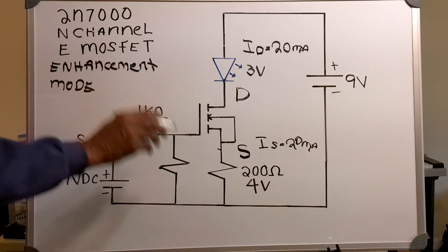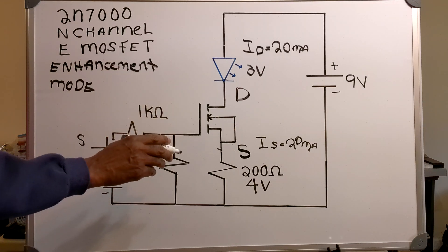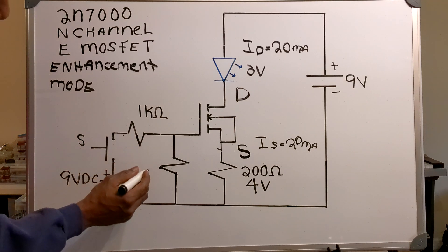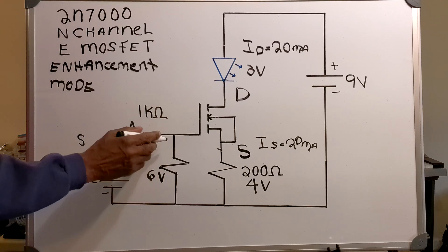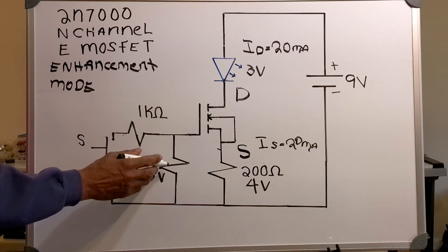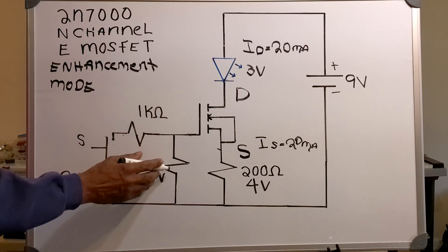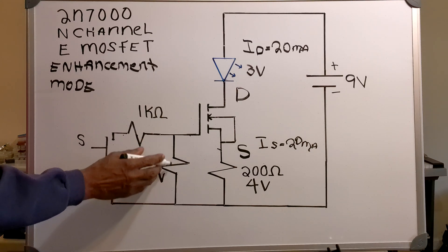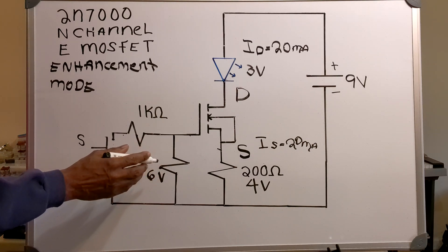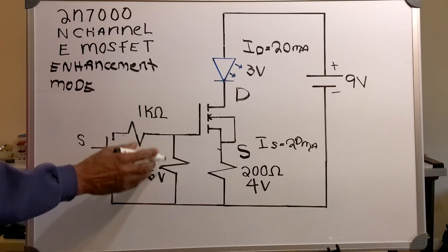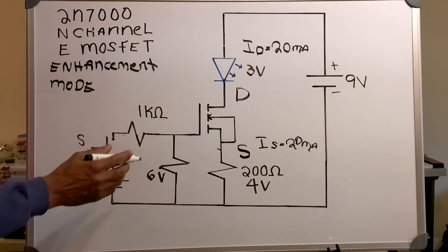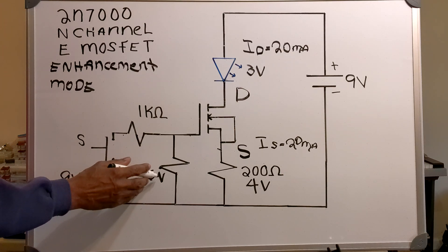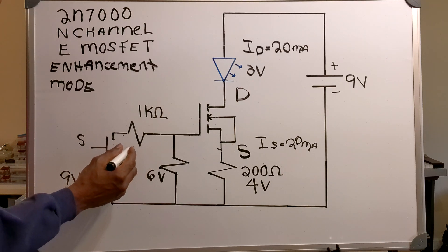Now, in order for me to have my 4 volts, I'm going to need 6 volts across my resistor right here. This resistor will be the resistor that supplies the gate voltage. Now, I'm going to need to determine the value of my resistor. I've got 9 volts here. If I'm going to have 6 volts here, then it means I'm going to have 3 volts here.